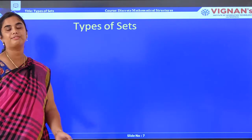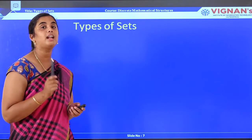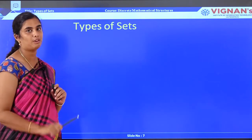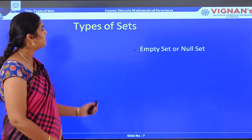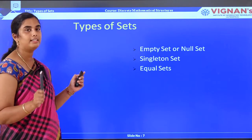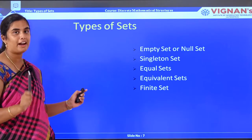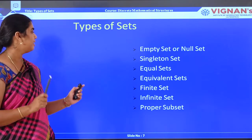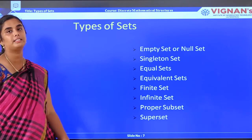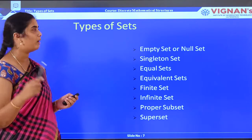Next comes the types of sets. Till now we have seen the representation of sets, the definition of sets, and how sets can be used in computer science. Now we will see the types of sets: empty set or null set, singleton set, equal set, equivalent set, finite set, infinite set, proper subset, and superset.